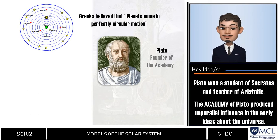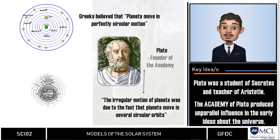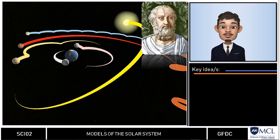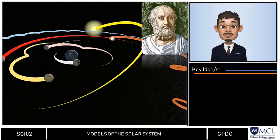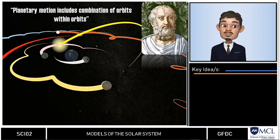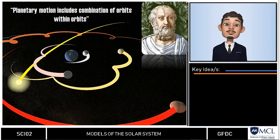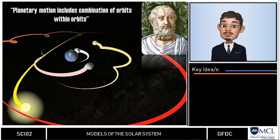This leads to the very important contribution of Plato in astronomy. This irrational motion of planets, the constant change of speed and direction, he said was perhaps due to the fact that planets move in several circular tracks. For Plato, planetary motion includes combination of orbits within orbits.